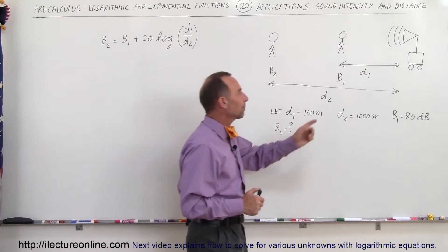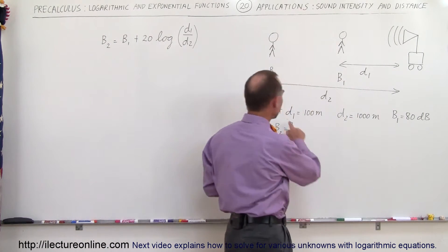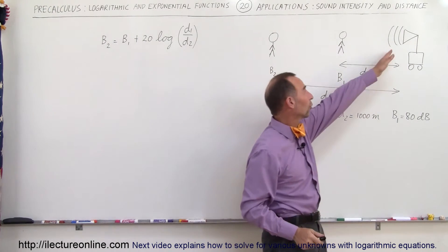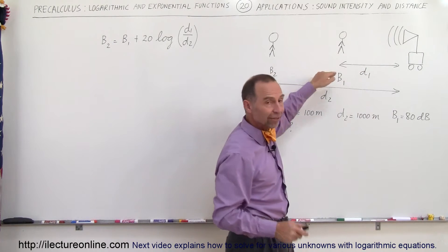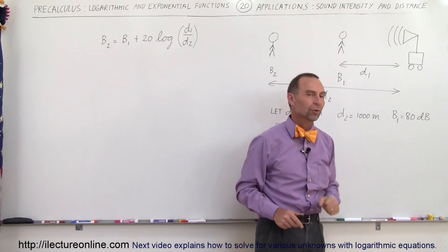For example, let's say that a person is about a hundred meters away. I think I'll let distance d1 equal to 100 meters, 100 meters away from a sound source, and the intensity of the sound in decibels as measured by that person, let's say that is equal to 80 decibels.